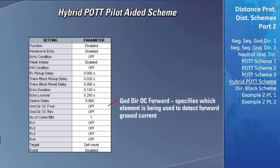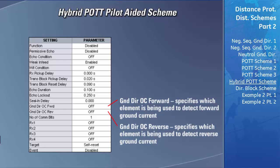The ground directional overcurrent forward field lets the hybrid POTT scheme know if the neutral directional overcurrent element or the negative sequence directional overcurrent element will be used to indicate the forward direction of ground current flow. If you do not want tripping and keying to occur upon the detection of forward ground currents in the hybrid POTT scheme, leave this setting to off. The ground directional reverse field lets the hybrid POTT scheme know which element will be used to indicate the reverse direction of ground current flow. If you do not want the hybrid POTT scheme to block operation when reverse current is detected, leave this field to off. The communication bit settings and the hybrid POTT scheme's ability to detect single-phase or multi-phase faults are configured the same way as covered in the earlier sections.